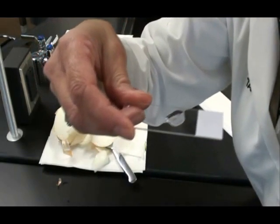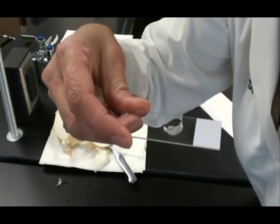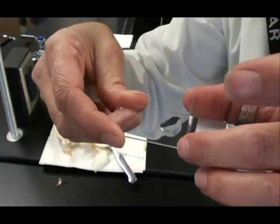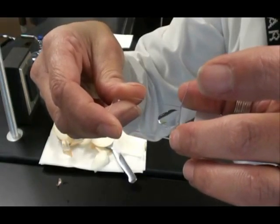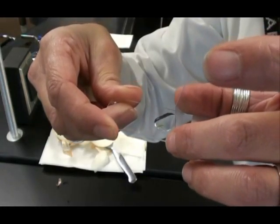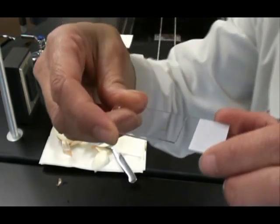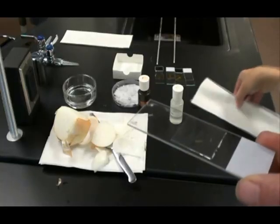The best way to apply that coverslip is to hold it at a right angle to the slide at one side of your specimen and then let it drop. As it falls, it will push the air out and you'll have fewer air bubbles this way. Here's my finished, prepared specimen.